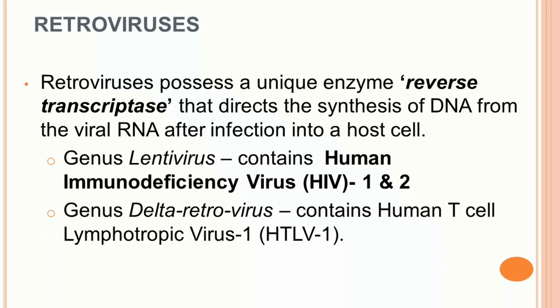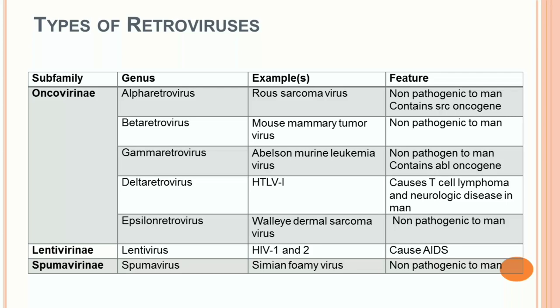Retroviruses are those viruses which possess a unique enzyme — reverse transcriptase — that directs the synthesis of DNA from the viral RNA after infection into a host cell. This is a little bit contradictory to the central dogma of life, where the starting point is DNA, then RNA, then protein. In Retroviruses, the starting point is RNA instead of DNA. In the Retroviridae family, there are two important genera: Genus Lentivirus, which contains HIV Type 1 and Type 2, and Genus Delta Retrovirus, which contains Human T-cell Lymphotropic Viruses. All other genera are non-pathogenic to humans.